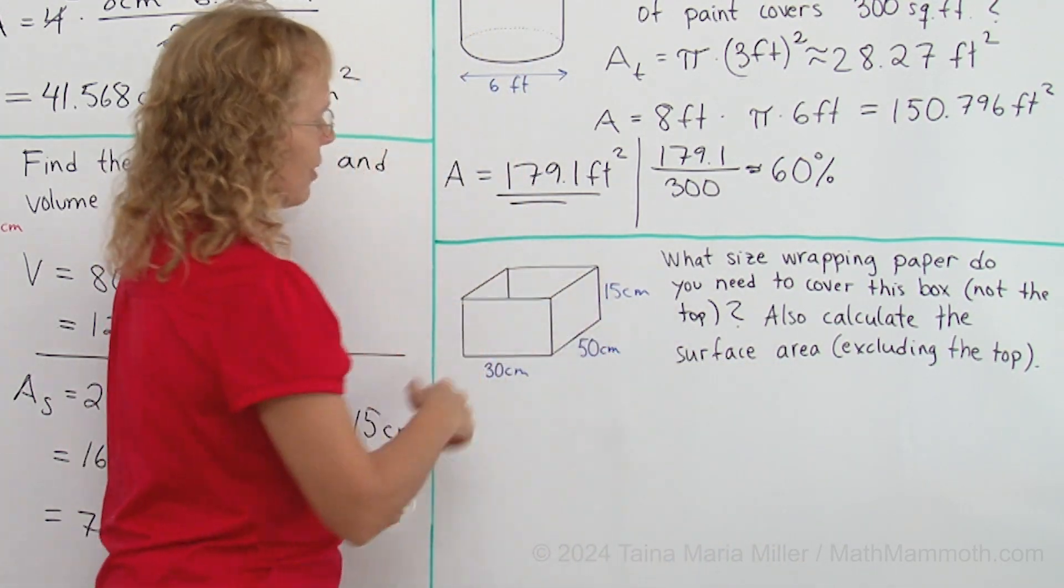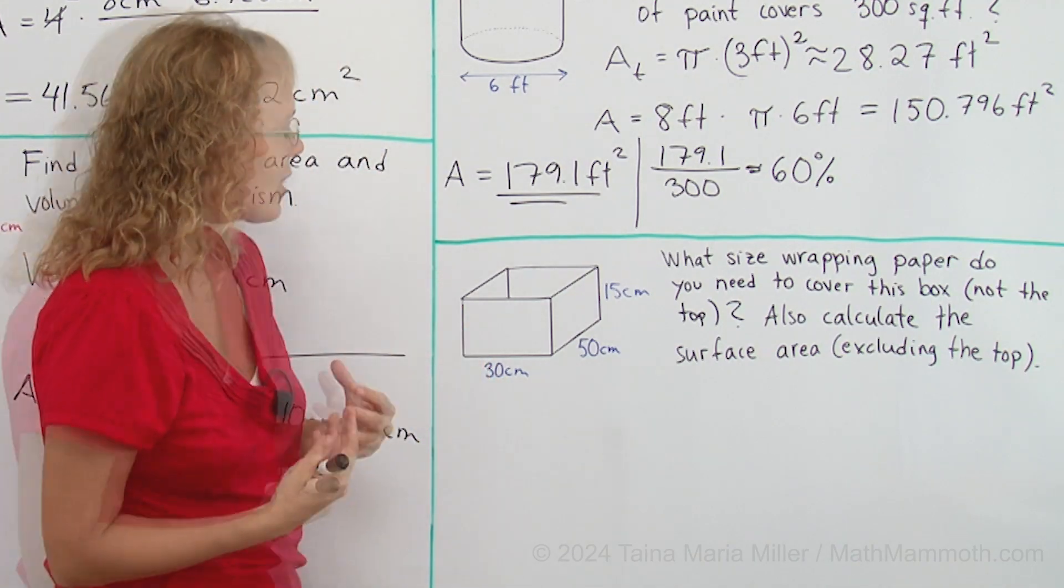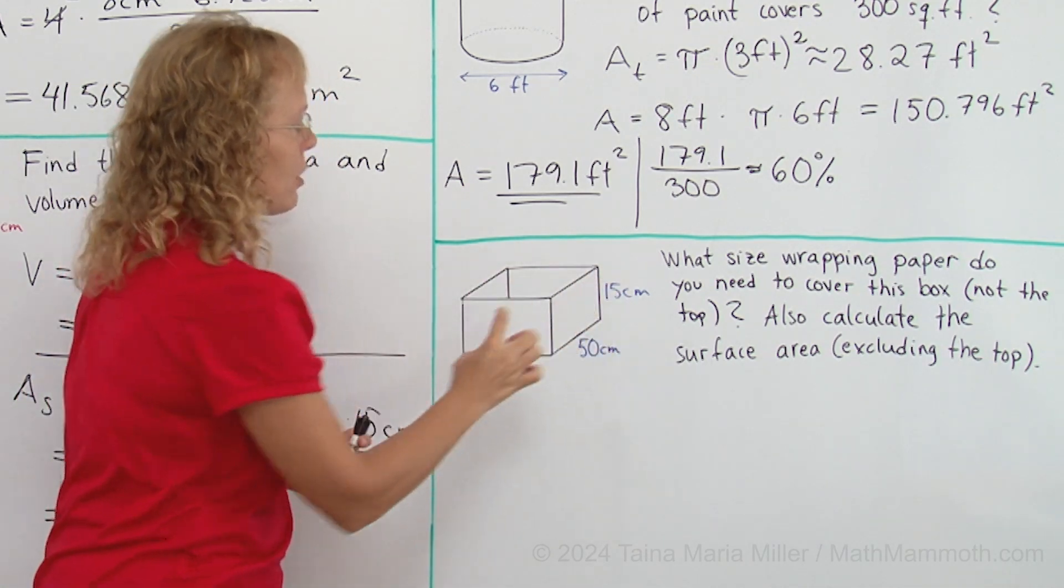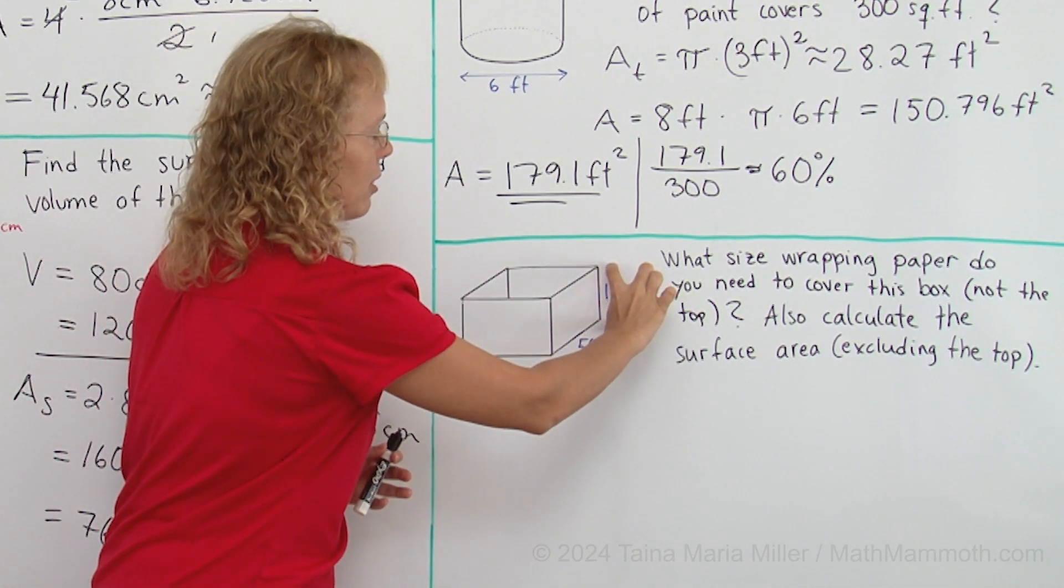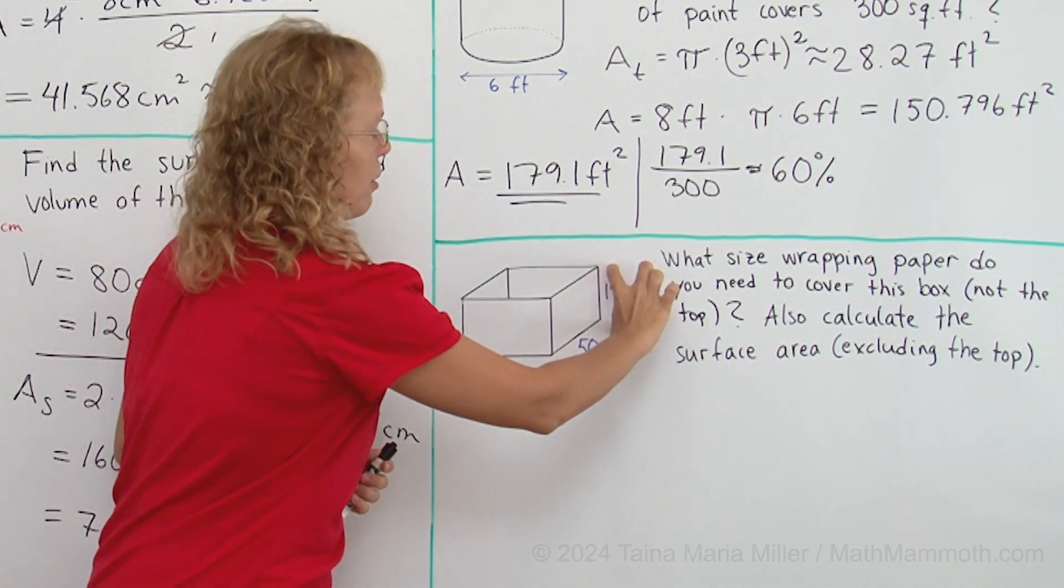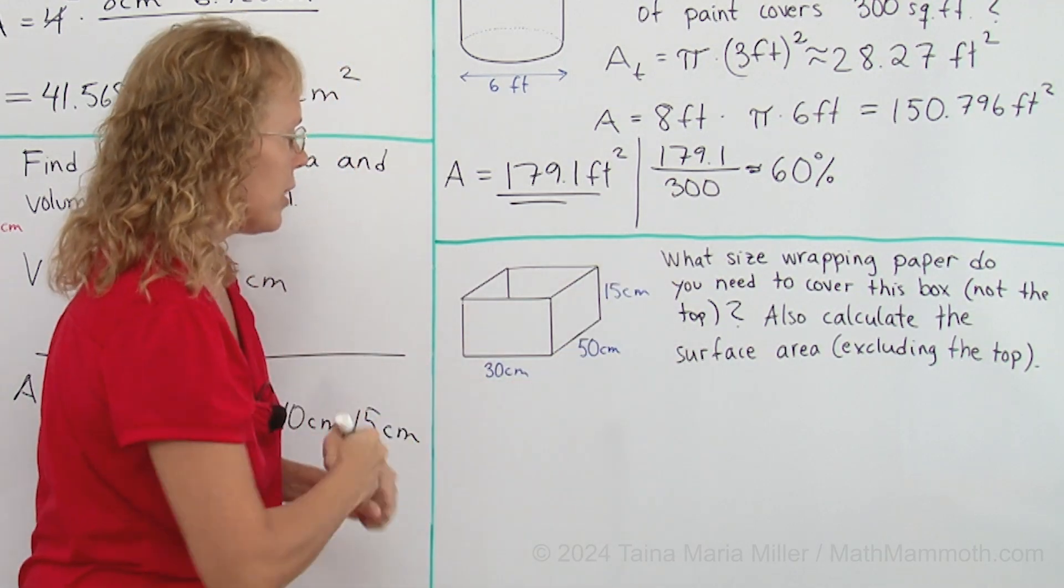Okay, if you've ever wrapped a box you can hopefully visualize this. The piece of paper that goes all the way around needs to be 15 centimeters by something. It needs to be a long rectangle, right? And one side of that rectangle is 15 centimeters.